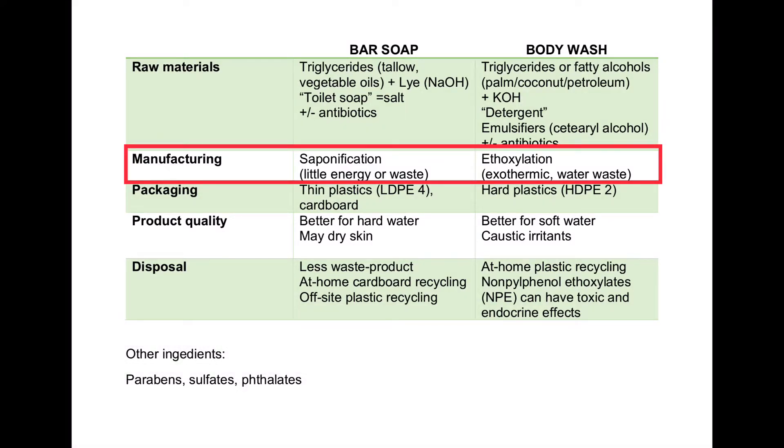Saponification is a low-energy process — in fact, you can make homemade soaps, and we're going to talk about that in just a minute. Whereas ethoxylation can actually require quite a bit of heat generation. Heat sequestration from that process is something to consider from a thermal energy standpoint, as well as water waste, because there is a lot of dirty water excess that has to be filtered off to make the products pure.